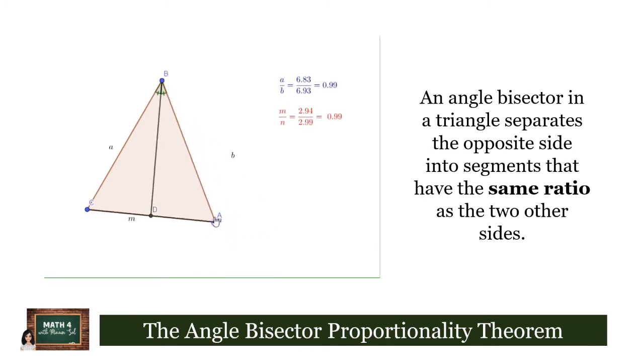We will move the vertices of the third side and examine the ratios. So what have we observed? The ratios are actually equal. This illustrates the angle bisector proportionality theorem.